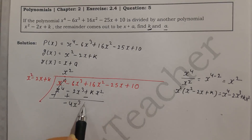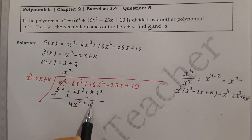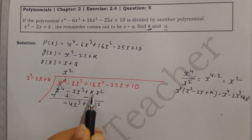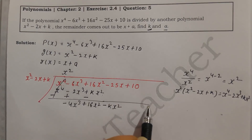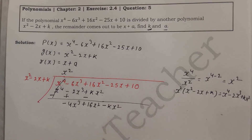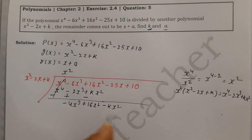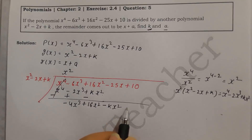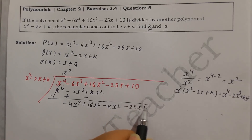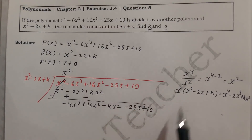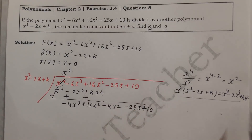We write 16x² with a positive sign, then minus kx². We will find the common factor when required. We also bring down the remaining part: minus 25x plus 10. This makes it easier to continue the division.